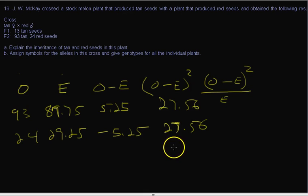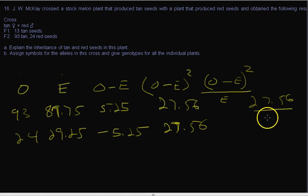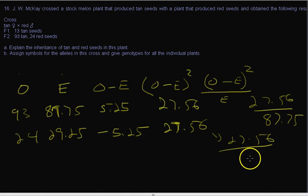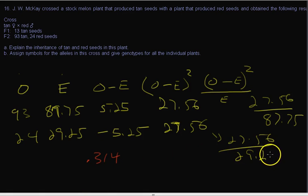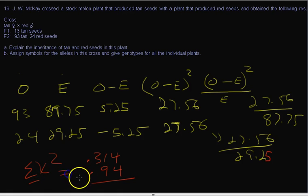It's not always going to be the same value in each category, but here it makes life easy — we only have to calculate it once. We compute (O-E)²/E: 27.56 divided by 87.75 equals 0.314, and 27.56 divided by 29.25 equals 0.94. We add those up because we want the sum of chi-square values: 0.314 plus 0.94 gives us 1.25. That's our chi-square number.